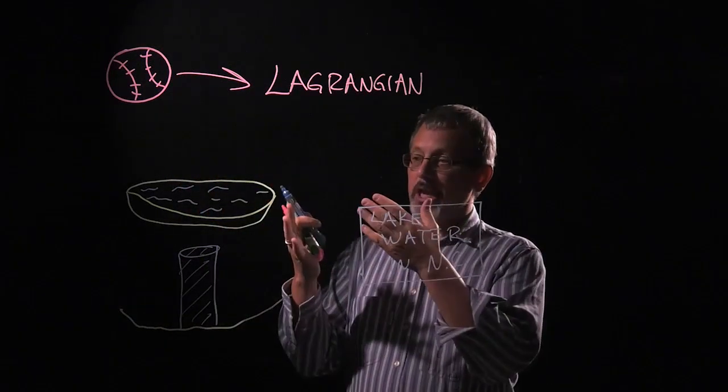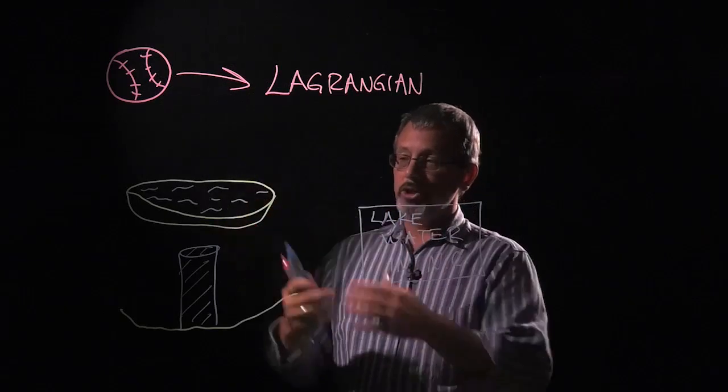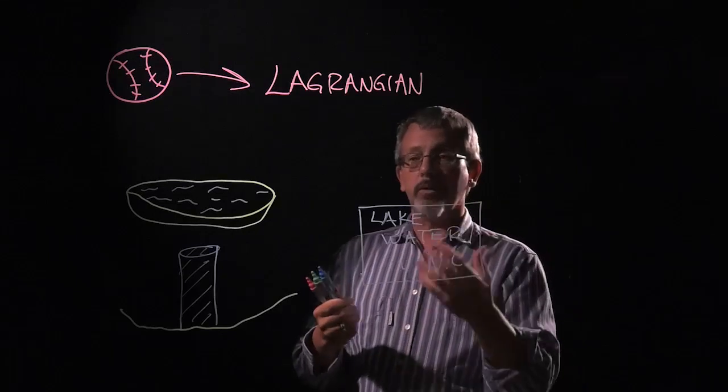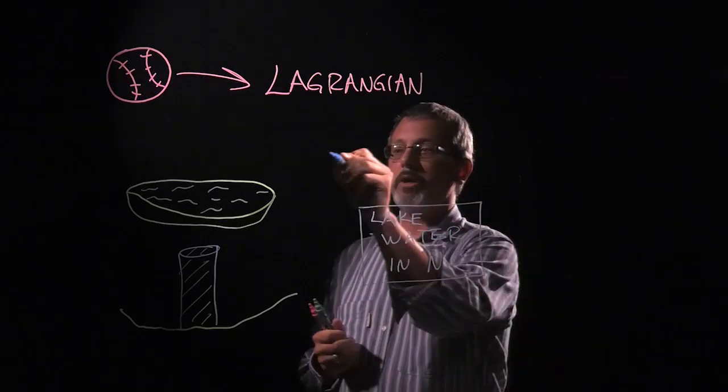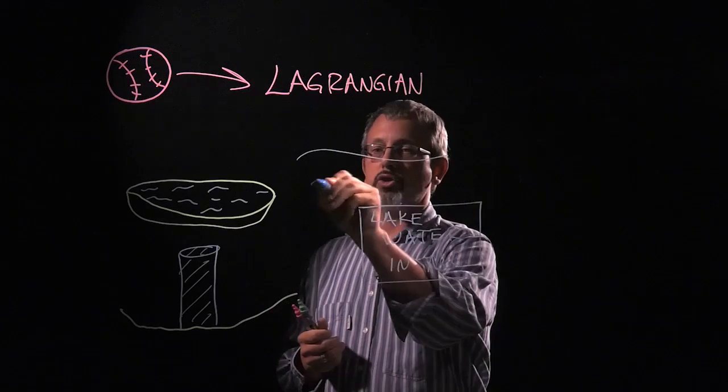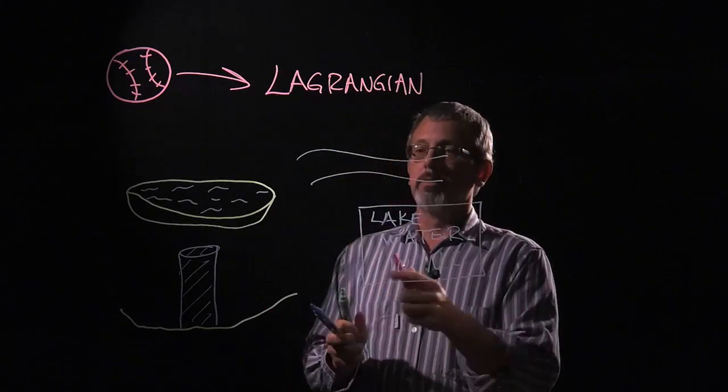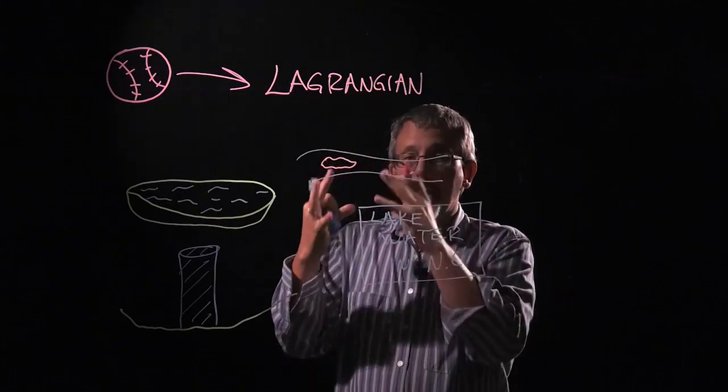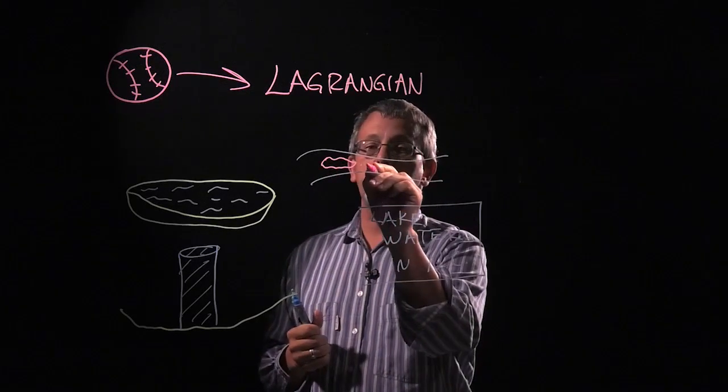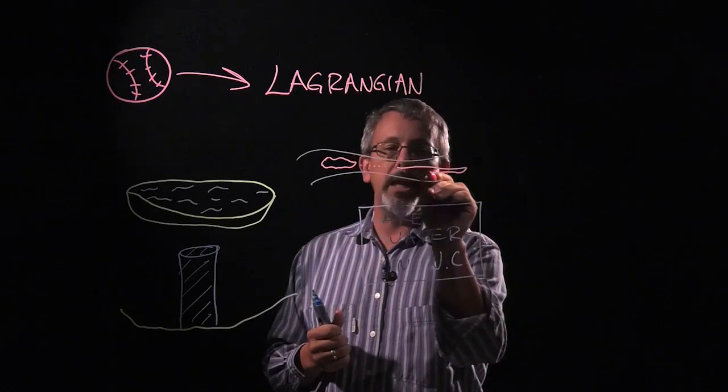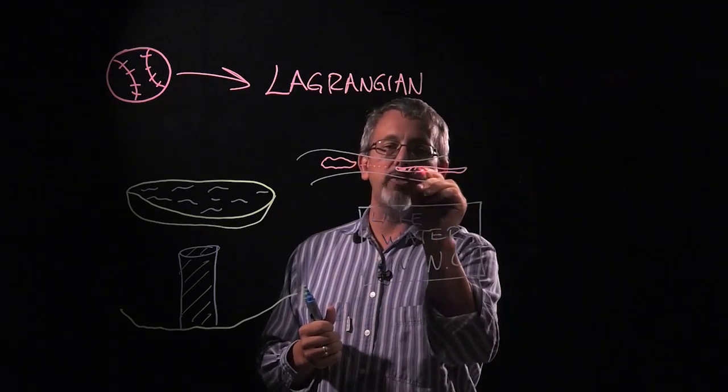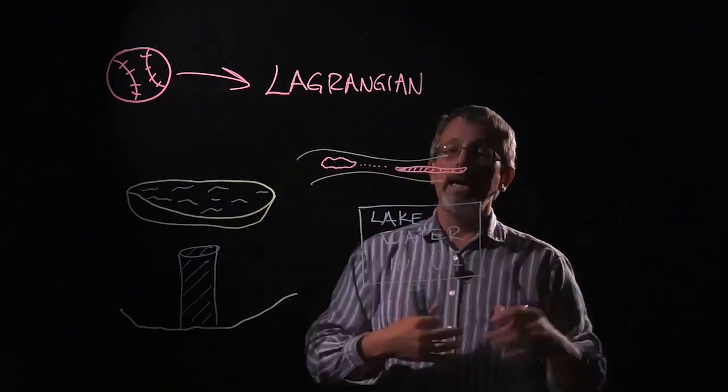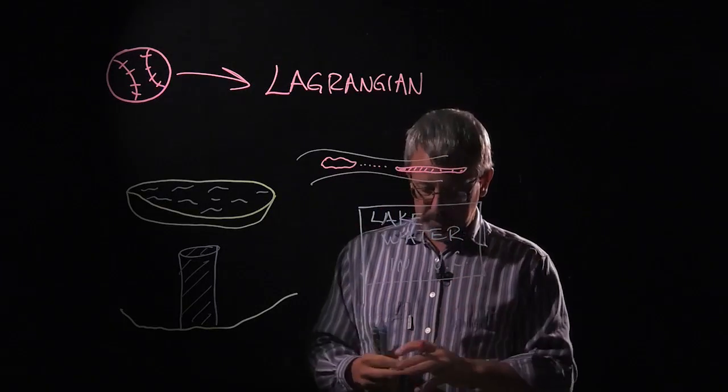So if I let the shape change, but I move with the shape, then that's still a Lagrangian perspective. For example, if there's a stream, if there's water flowing in a stream, and I make some dye and put a plug of dye in that water, and then I watch and I travel with that dye as it moves through the stream, and maybe the dye stretches out and gets thinner as it moves downstream. And if I kind of travel with that dye, that is still a Lagrangian perspective.